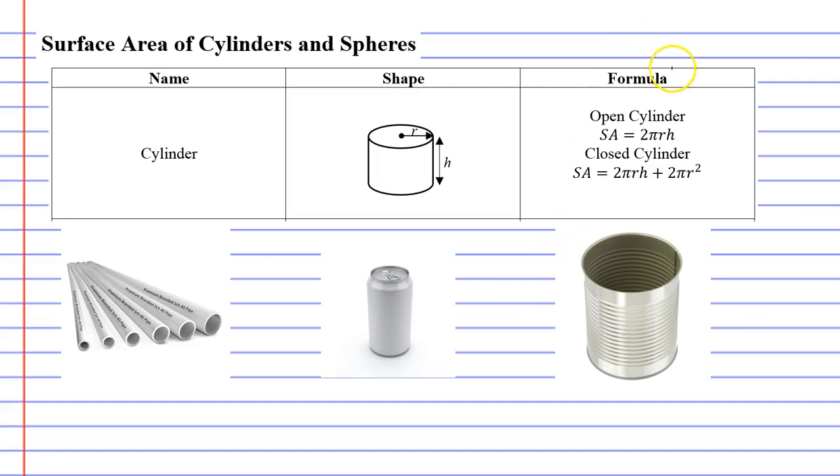There are actually two formulas on the side that you'll notice. One is for an open cylinder and the other is for the surface area of a closed cylinder.